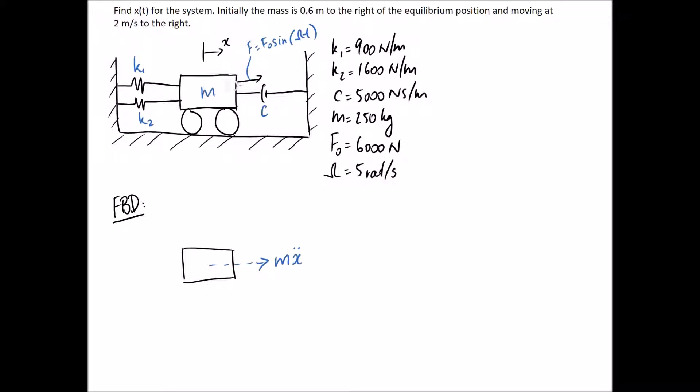So if this is moving to the right, our damper and our two springs are going to try and resist that. So we're going to have cx going back, and also k1x and k2x going back.